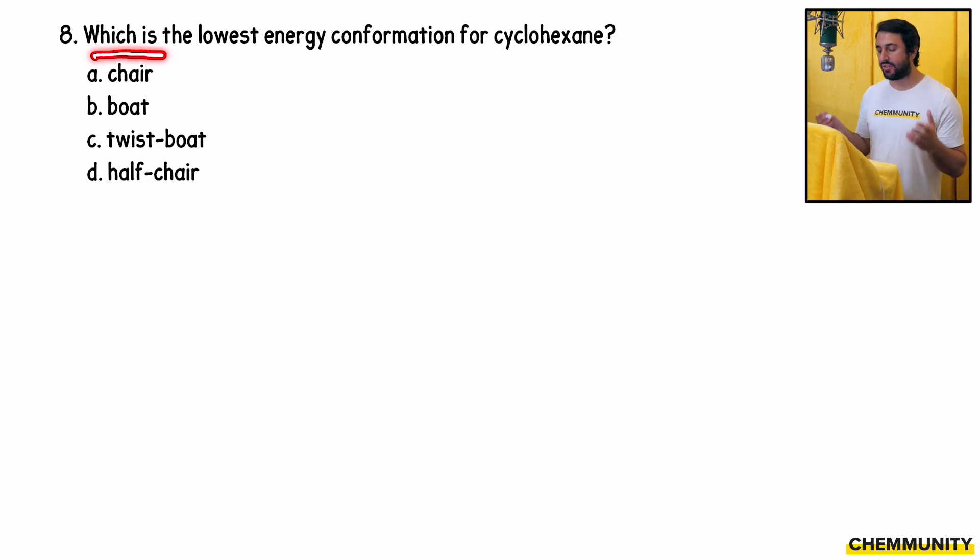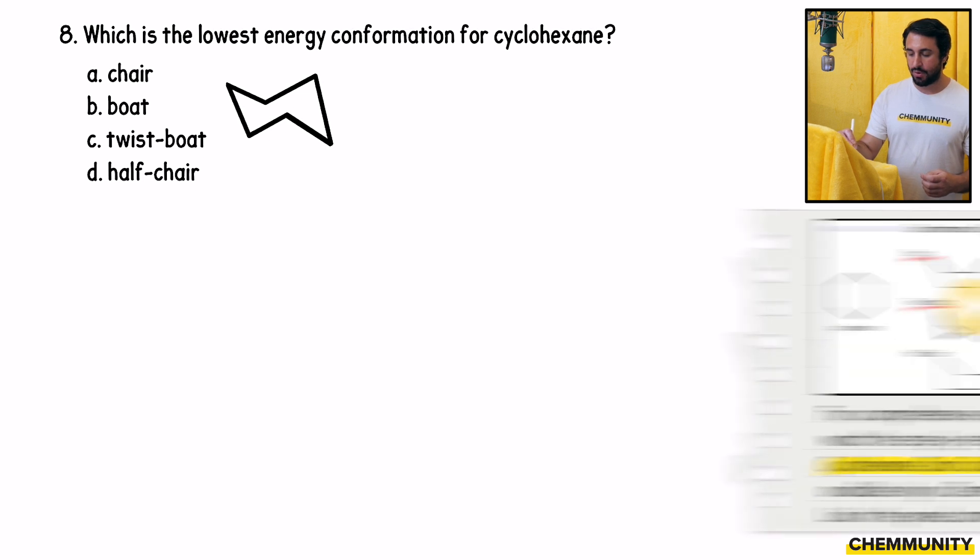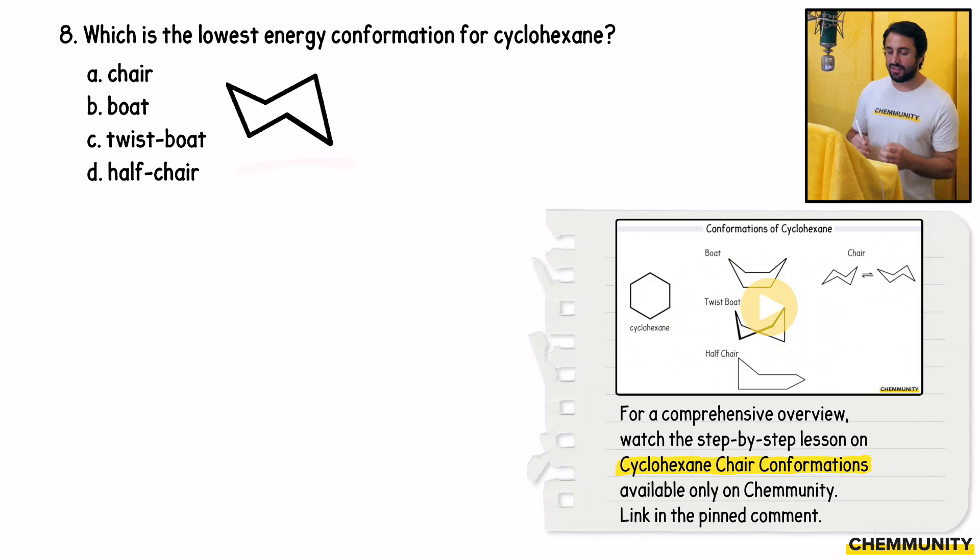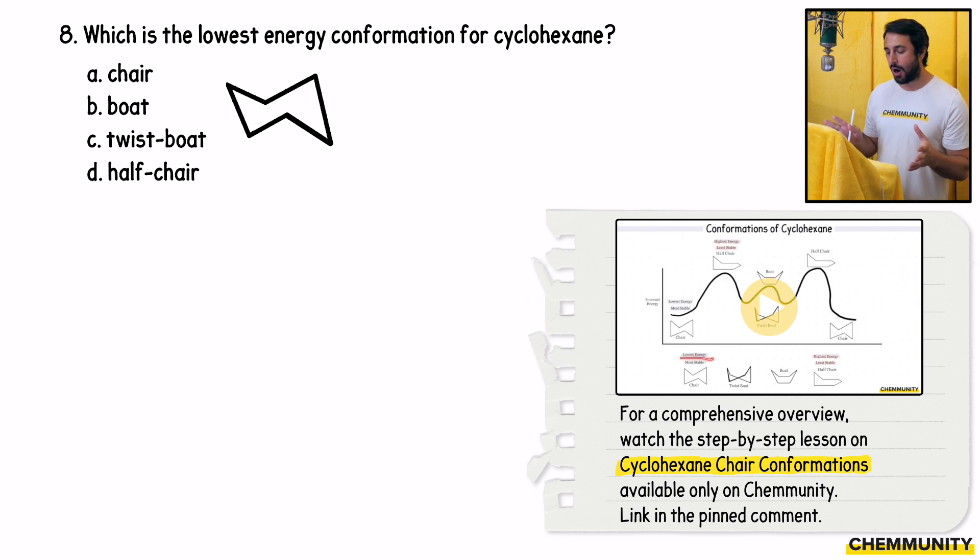Number eight asks, which is the lowest energy conformation for cyclohexane? So this one's pretty straightforward. Option A is chair. Let's just draw the chair really quick. And so what we need to understand about the chair is it does a couple of things. First, it allows for all of the carbons to obey the perfect tetrahedral geometry that they enjoy.